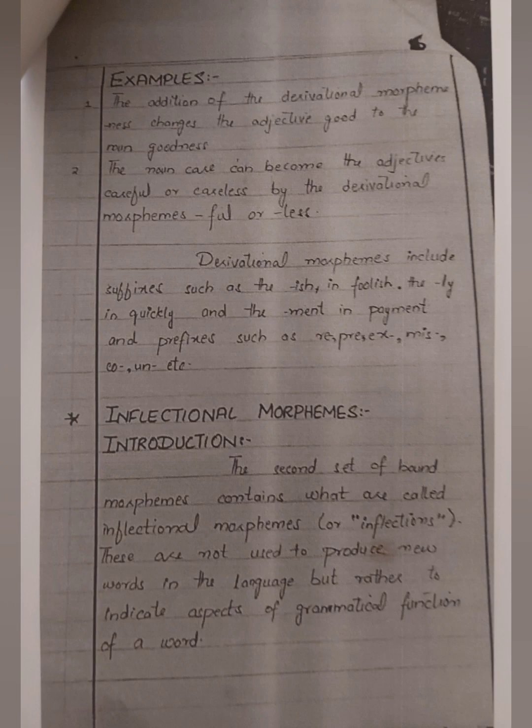More examples of derivational morphemes: 'ish' in 'foolish', 'ly' in 'quickly', 'ment' in 'payment' — these are suffixes and prefixes. An infix is when a word is inserted into a proper word, for example 'Singapore' becomes 'Singa-bloody-pore', or 'absolutely' becomes 'abso-bloody-lutely'. These are examples of infixes.